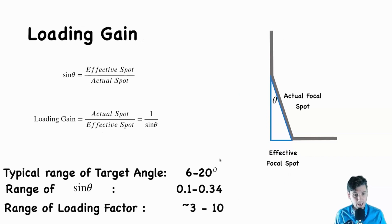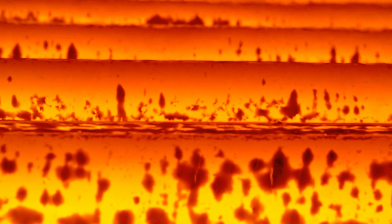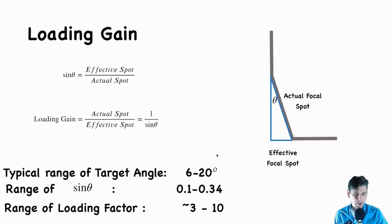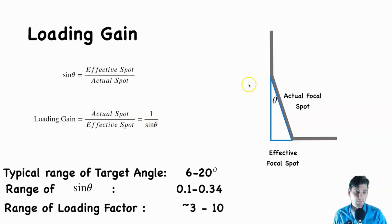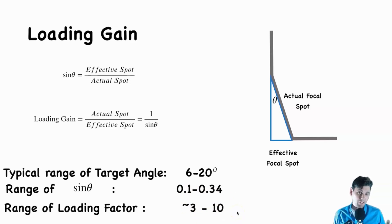We also talk about that in terms of the loading gain. The loading gain means we're able to deposit more energy without melting the x-ray tube. Using the same equation but solving for a different variable, the loading gain is the actual spot divided by the effective spot, which equals one over sine of theta. Since sine of theta varies from 0.1 to 0.34, one over sine of theta varies from about 3 to about 10. So the line focus principle gets us between a factor of 3 and a factor of 10, depending on the target angle.